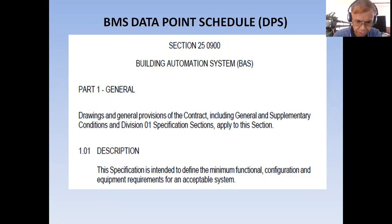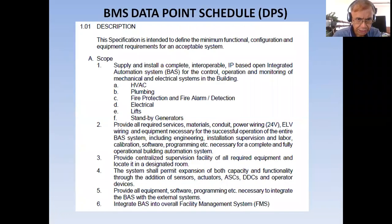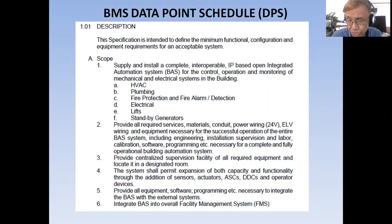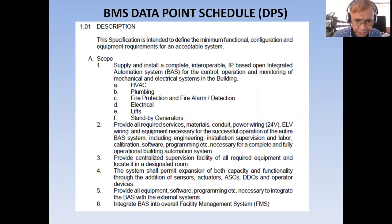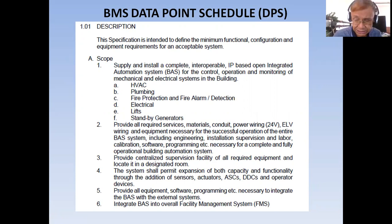The building automation system general provisions describe the scope: supply and install a complete interoperable IP-based open integrated automation system. When they say IP-based, that is Internet Protocol. It covers the operation and monitoring of mechanical and electrical systems in the building — including HVAC (heating, ventilating, and air conditioning), plumbing, fire protection and alarm detection, electrical, lifts or elevators, and standby generators.